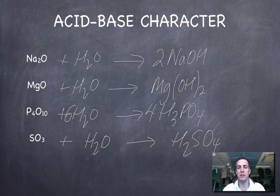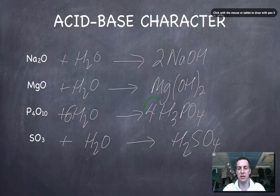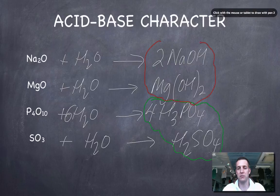So when you're asked to explain the acid-base character of an oxide, you need to write an equation to show it reacting with water and producing either, and we've got the acids here, and we've got the bases over here.